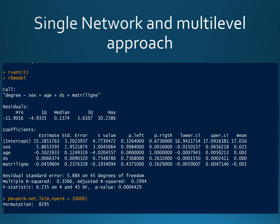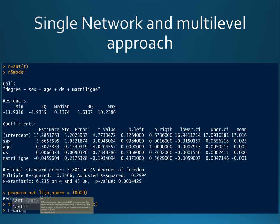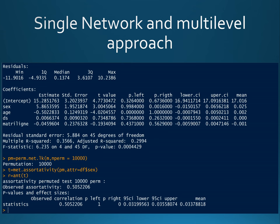Here we will do assortativity by sex. To do that, you again input the permuted object and the attribute you want to test. Here it is basically computing the assortativity on all your permuted data. You will again obtain a posterior distribution of those assortativity values in your data. You will compare with the function ant to the real one to obtain again the p-value, the confidence interval, and the mean of your posterior distribution.